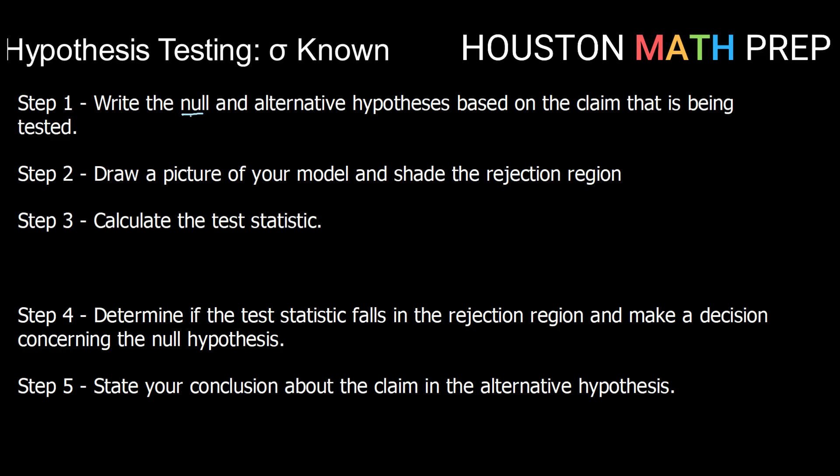Remember that your null hypothesis needs to be H₀: μ equals whatever value is the status quo. And then your alternative hypothesis, or Hₐ, will be a comparison of μ to that number based on your claim. So is μ greater than that number, less than that number, or just not equal to?